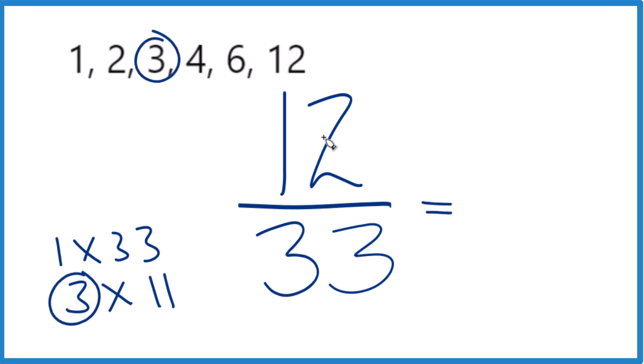So divide 12 by 3: 12 divided by 3 is 4. And divide 33 by 3: 33 divided by 3 is 11. We end up with 4/11.